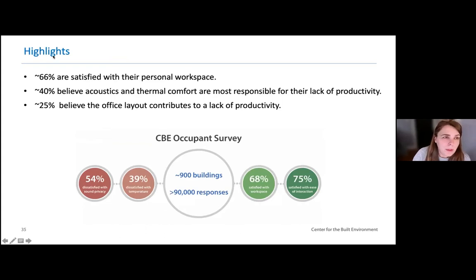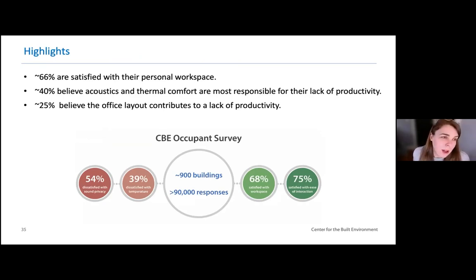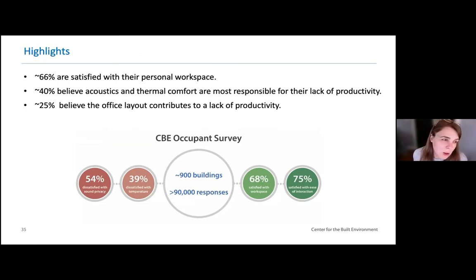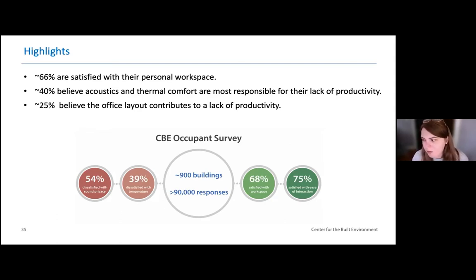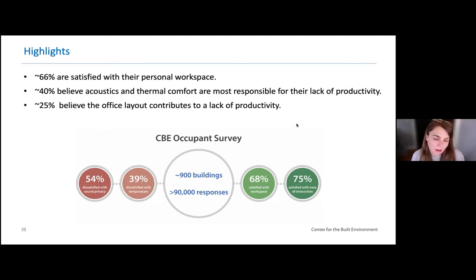Some highlights overall: about two thirds of the population are satisfied with their workspaces in general. About 40% believe acoustics and thermal comfort are the most problematic and impact productivity. And about a quarter believe that the office layout contributes to lack of productivity. All of these are really useful things to know, especially if you're thinking about a new design and anticipating where problem points might be, or in looking at how your space is performing and giving context into how normalized that might be.